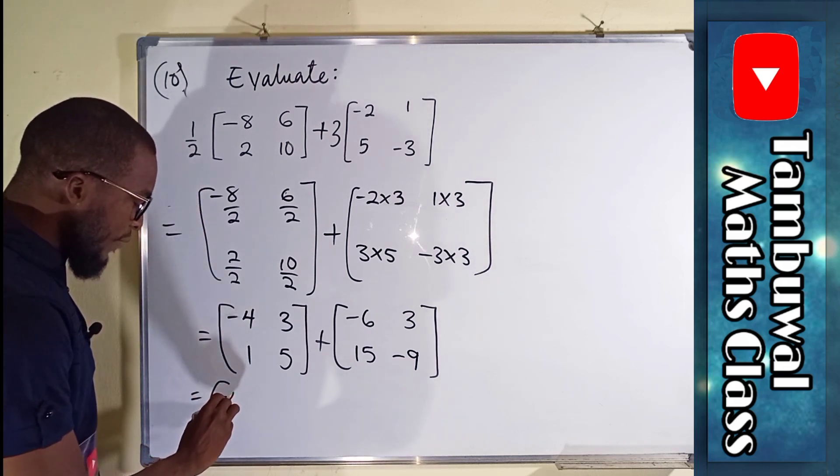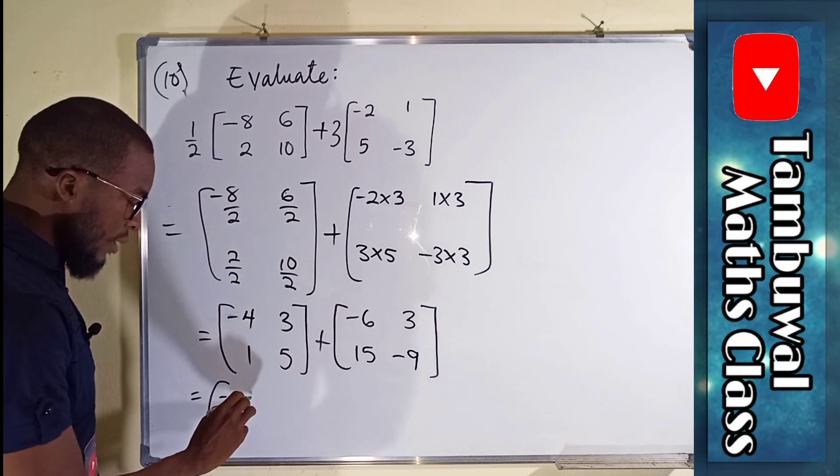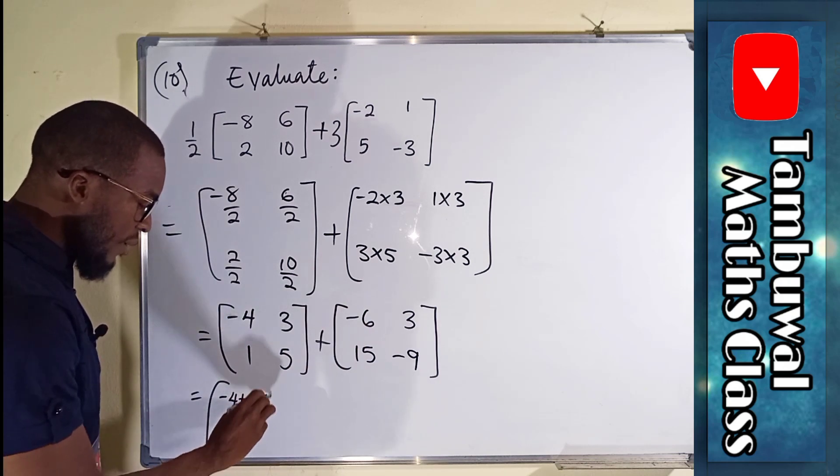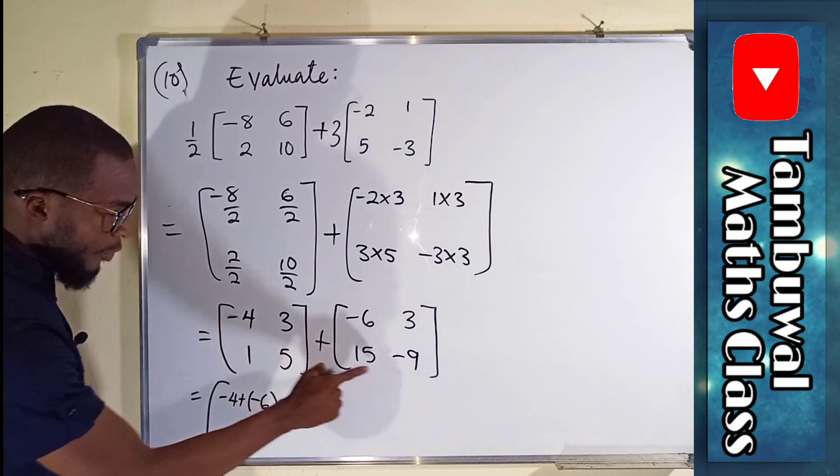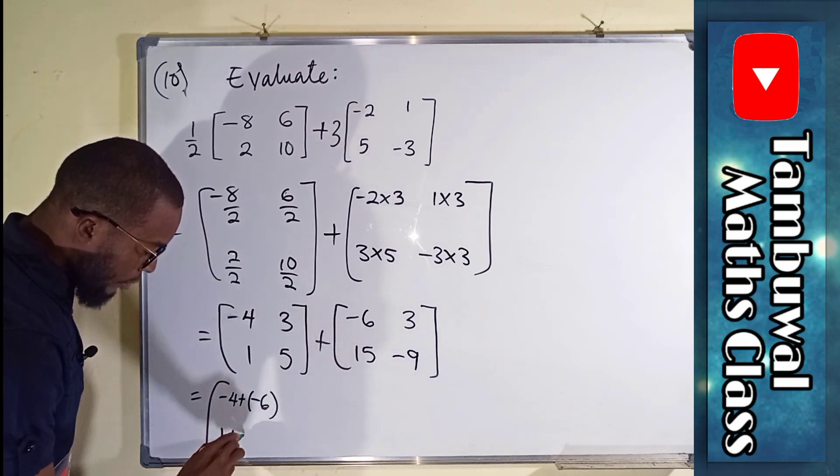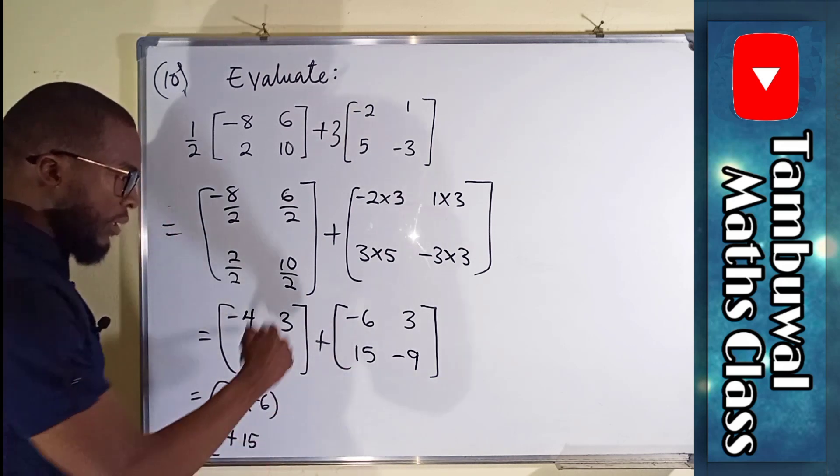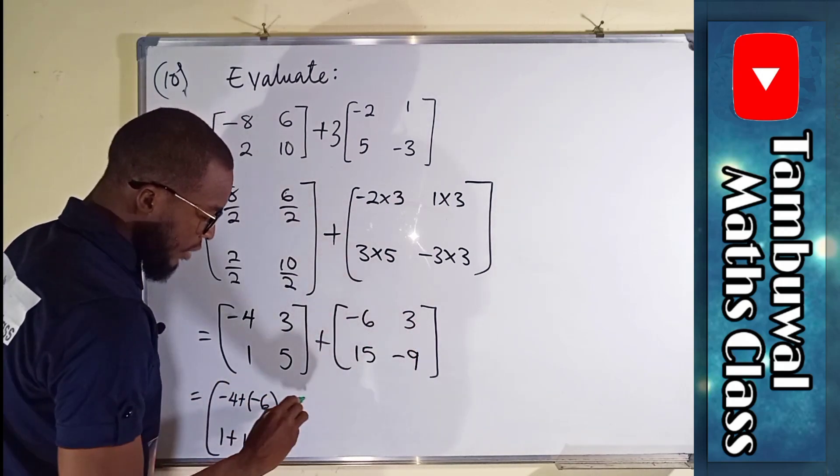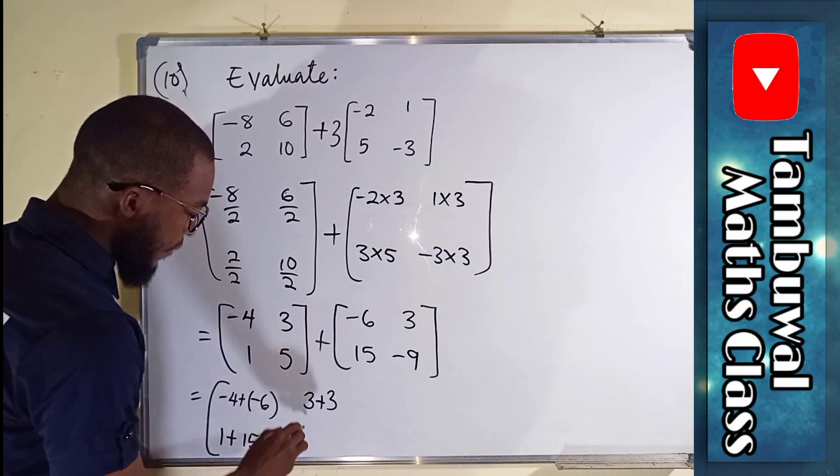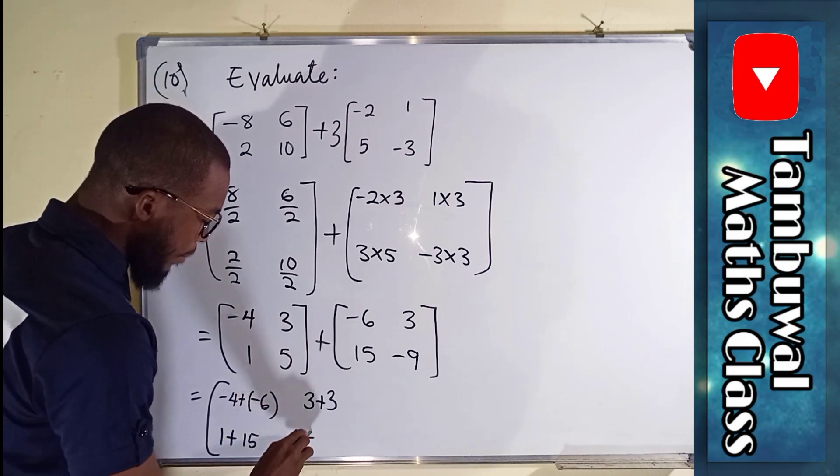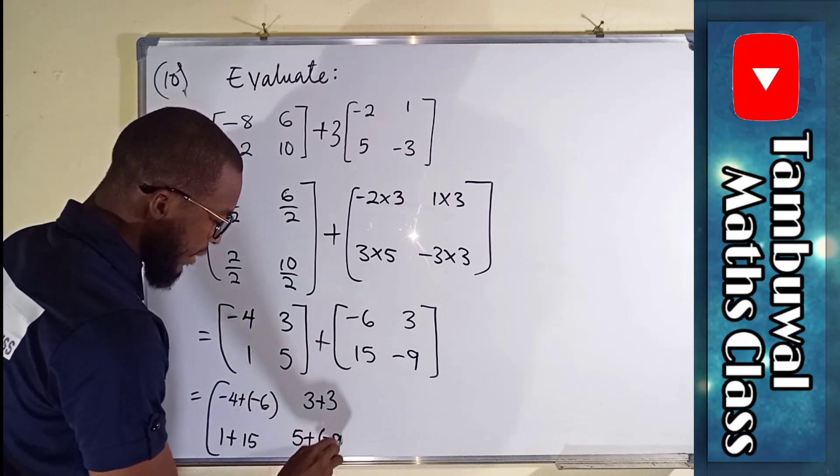negative 4 plus negative 6. 1 plus 15. Then we have 3 plus 3. We have 5 plus negative 9.